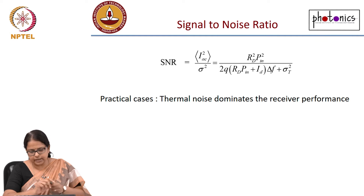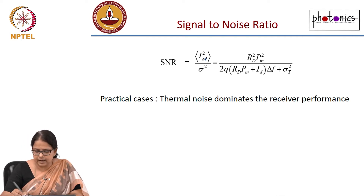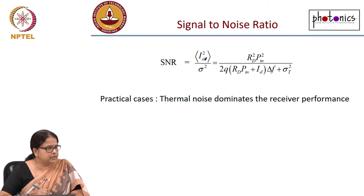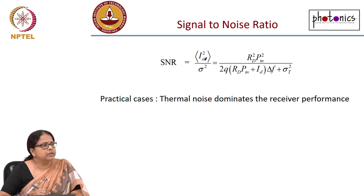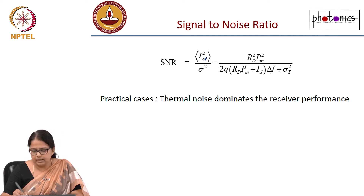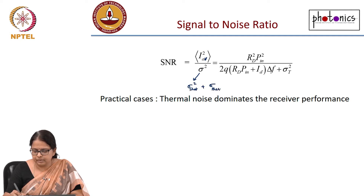Signal-to-noise ratio is the average I-squared average signal power, which is proportional to the square of the current, divided by noise power. Noise power is proportional to sigma squared. That variance will have sigma_short squared plus sigma_thermal squared.